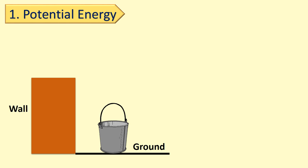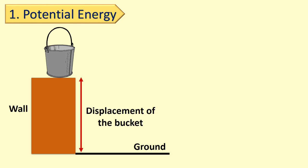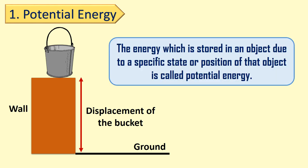Potential energy: suppose a bucket is lying on the ground. It has no energy, so it cannot do any work. But what happens if we lift the bucket to a certain height and place it on a wall? When we lift the bucket from the ground by applying force, displacement of the bucket takes place. As a result, the bucket does work and energy is stored in the form of potential energy. The energy which is stored in an object due to a specific state or position of that object is called potential energy.